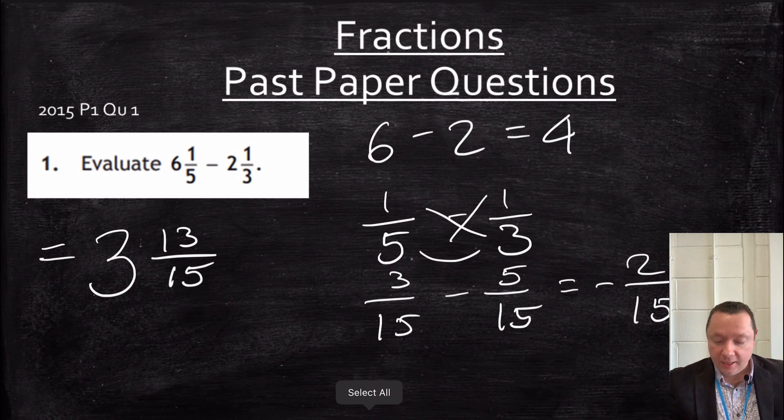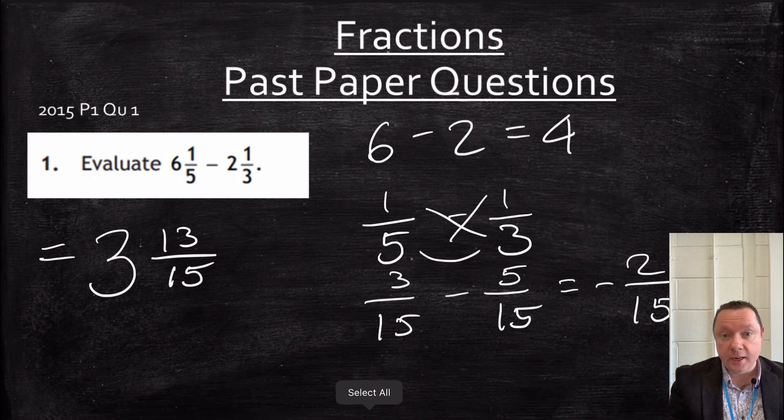One quick and easy way to think of that is, if you look at the denominator, 15, 15 take away the numerator 2 is 13, so it's 13 fifteenths.